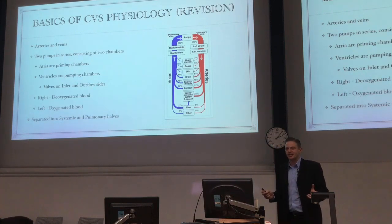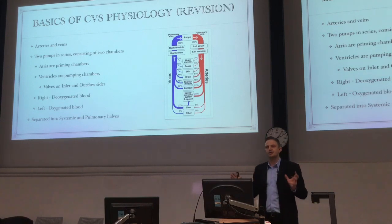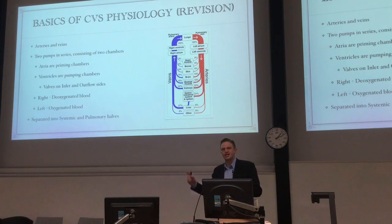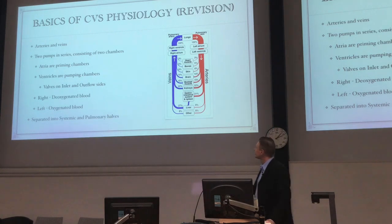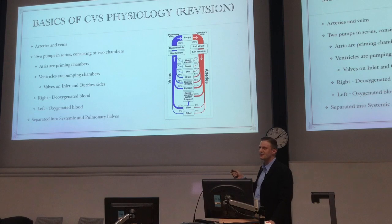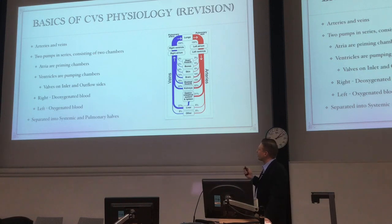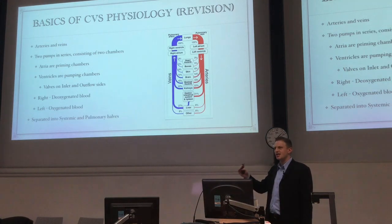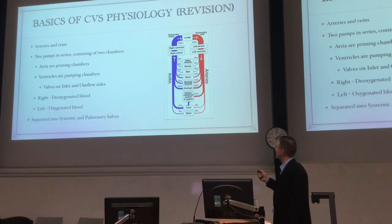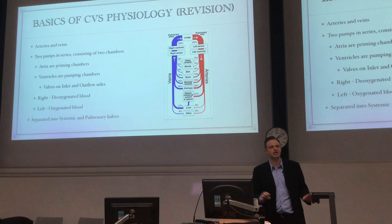Going through the basics of cardiovascular physiology: in essence, it's a continuous pipe of veins and arteries with two pumps creating two circuits in series. You have the right and left side of the heart in series. They have priming chambers, which we call atria, and pumping chambers, which we call ventricles. On the pumping chambers there are valves on the inlet and the outflow side, so blood continues going through the vascular bed in a forward direction. On the right side, deoxygenated blood goes to the lungs, returning oxygenated to the left side, and is pumped through to the body.